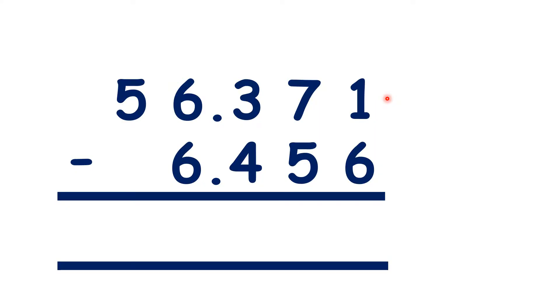We have 56.371 minus 6.456. Our decimal points are lined up, which means that all of our other place values are lined up as well.